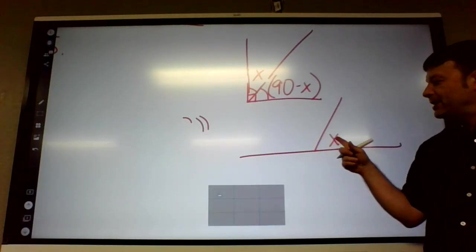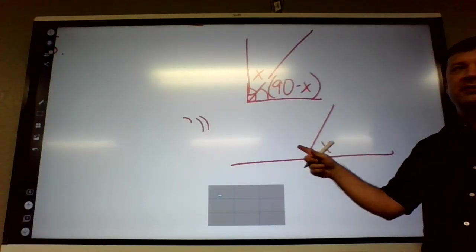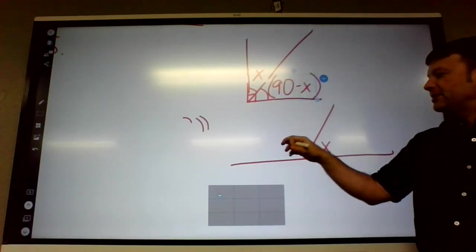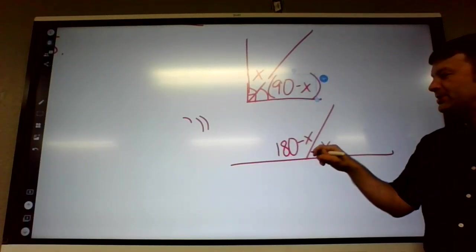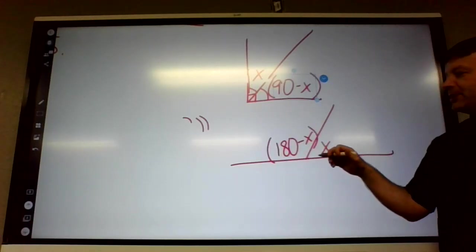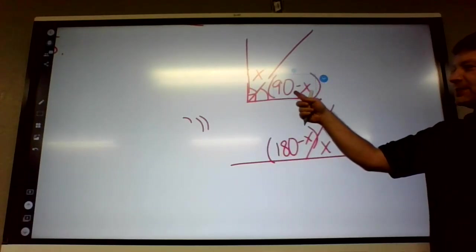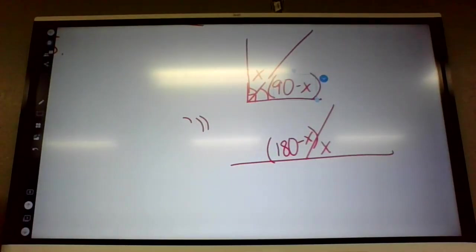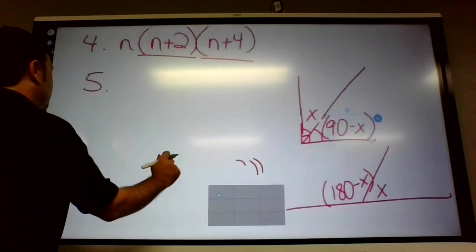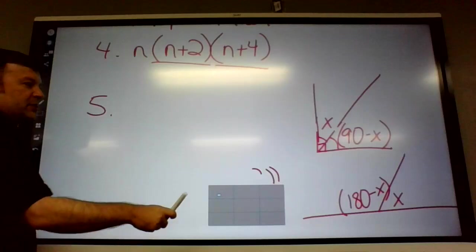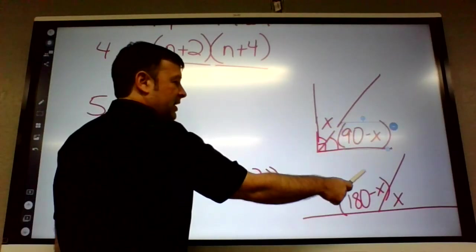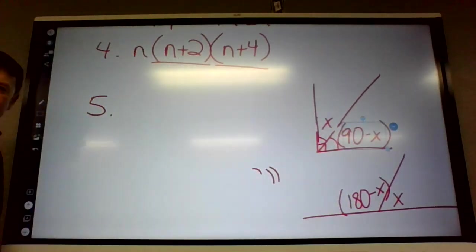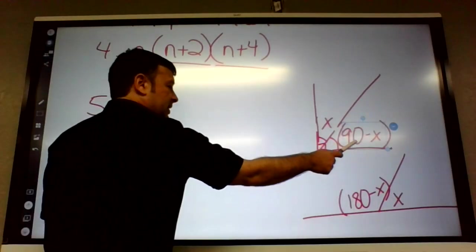Okay, together they're 180. If this is X, what would this one be called? 180 minus X. So this would be called the supplement of the angle. So when we're doing this problem, when they say complement, it's that. When they say supplement, it's that. Okay, so on number five, it says the sum of, and somebody said this already, but what did sum mean again? Adding.